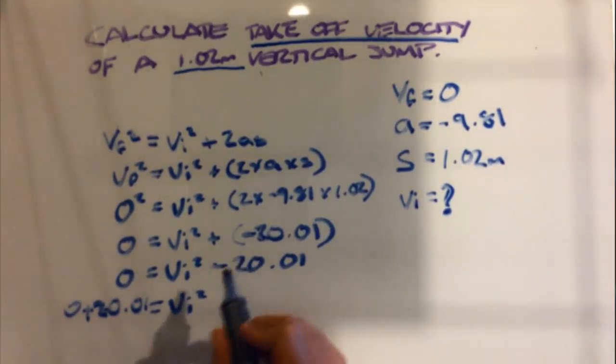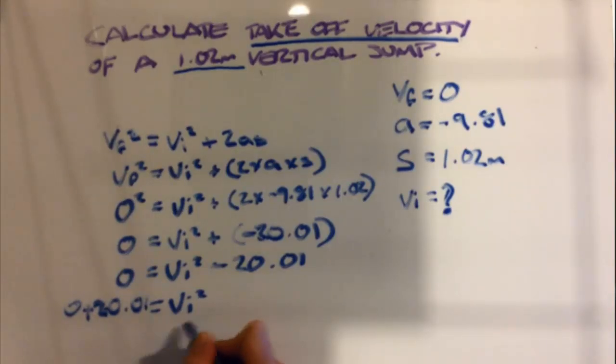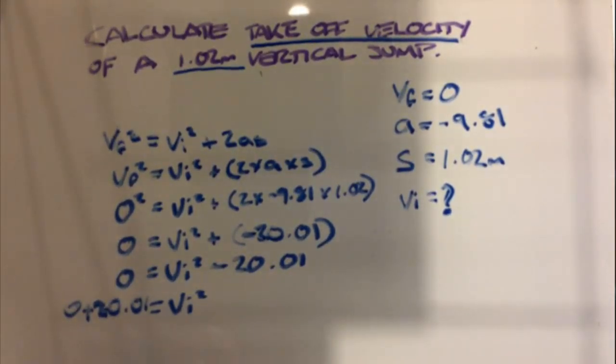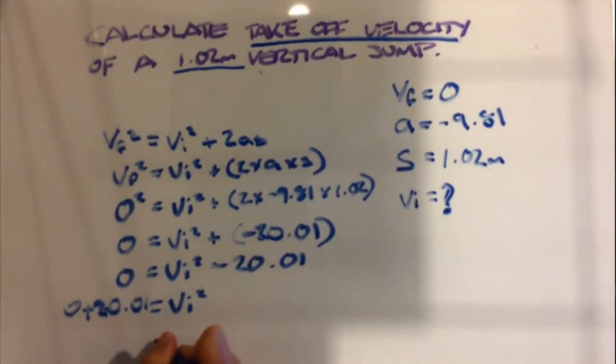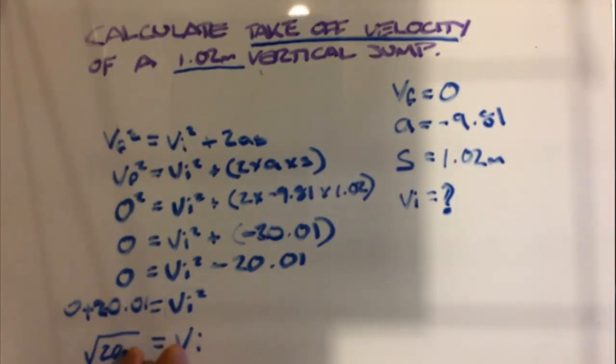It's still not finished, because on this side we have our initial velocity squared. We just want our initial velocity on its own. To get rid of our squared, we can do a square root, which leaves us with vi. Whatever we do on one side, we have to do on the other. So we have the square root of 20.